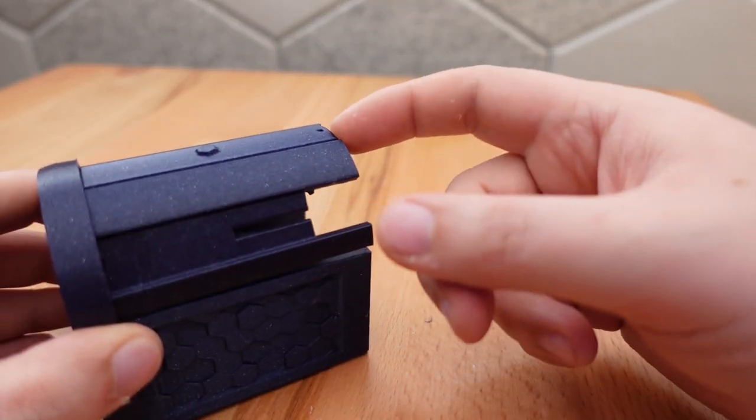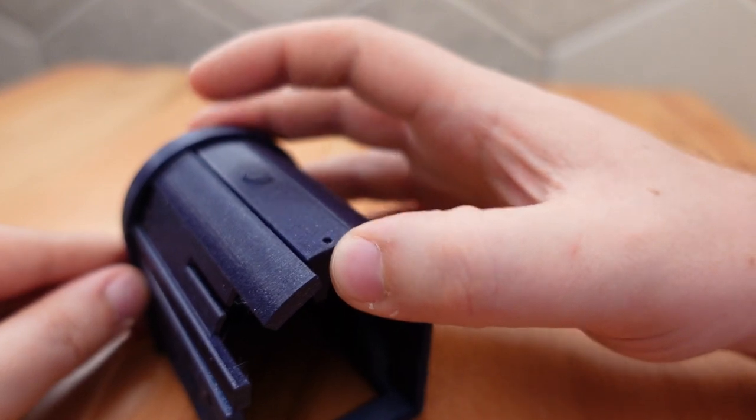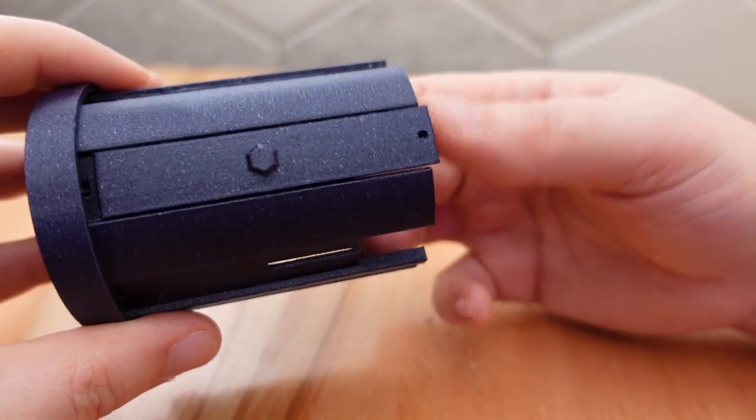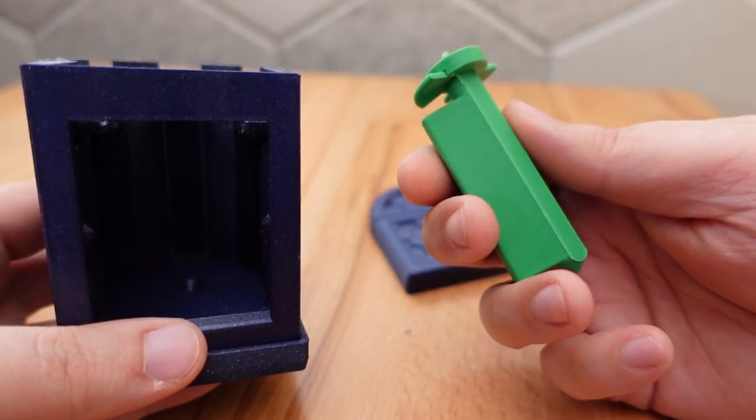Next, let's test fit the slats, and make sure they run smoothly in their tracks. If the slats don't fit, a little sanding on the side may help. Now it's time to add the axle assembly.